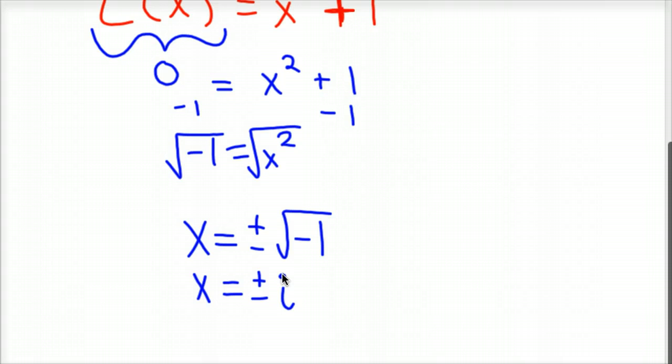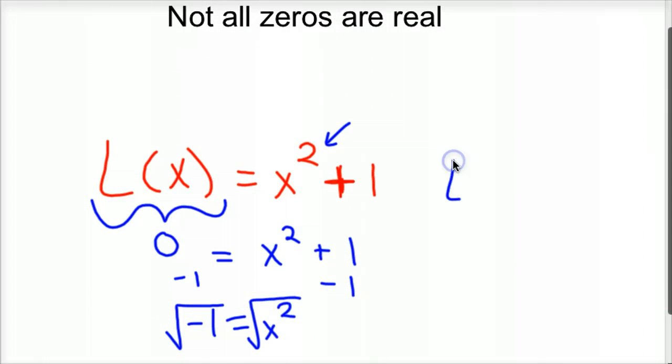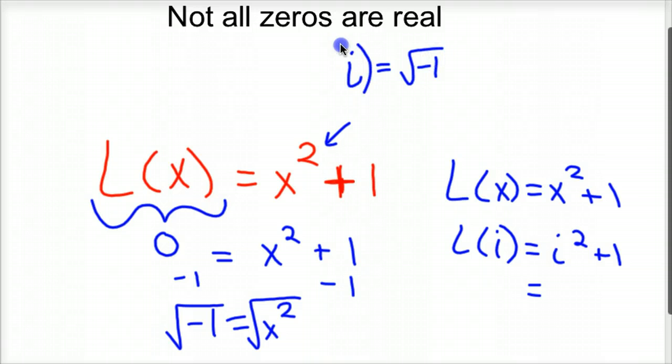If you plug that in to the function, just to verify, L(i) = i² + 1. If you keep doing that, well, i² is -1. Let's look back at our definition. i is the square root of -1. If you square both sides of the equation, a square and a square root kind of cross each other. They're inverses of each other. So I know i² = -1. So those are two definitions that are good with imaginary numbers. That actually shows you pretty much everything you need to know with imaginary numbers.